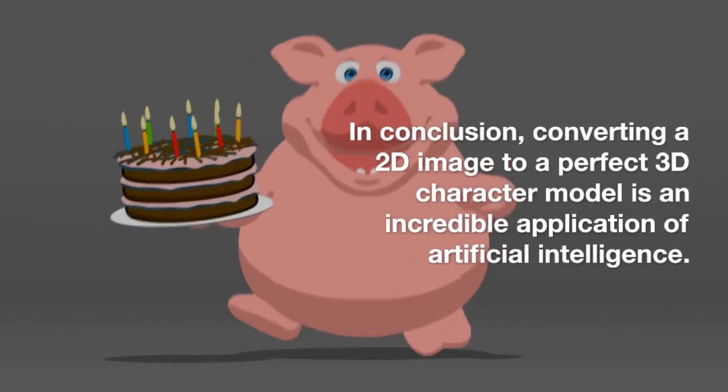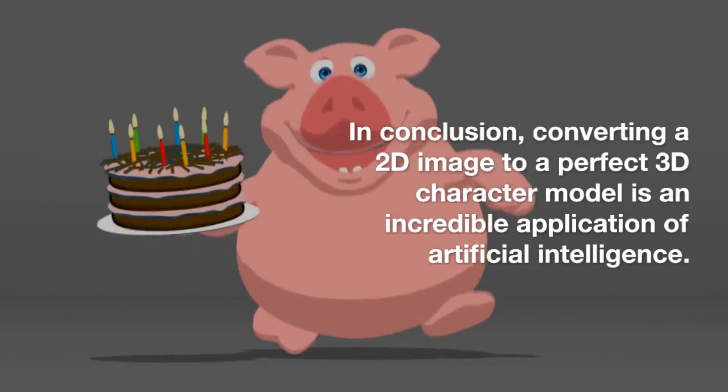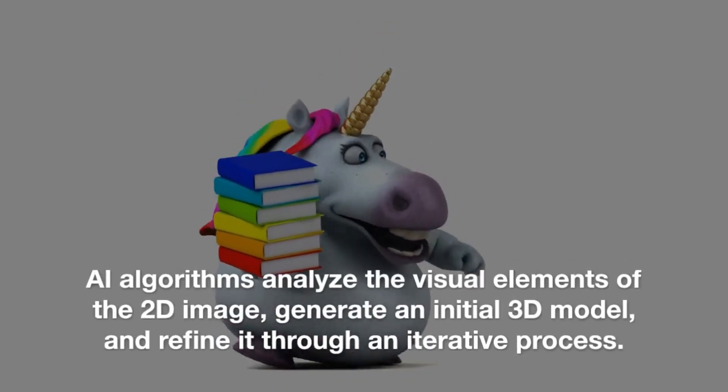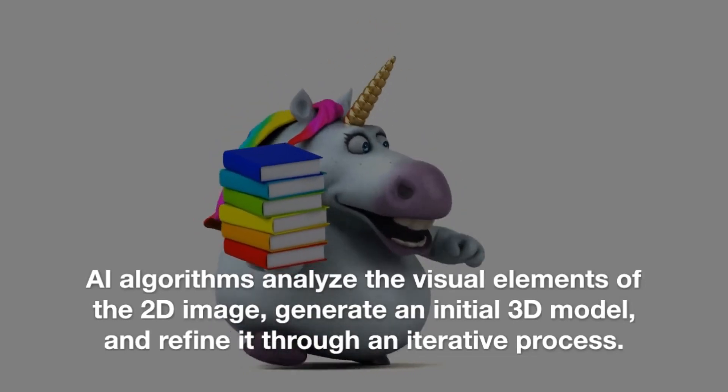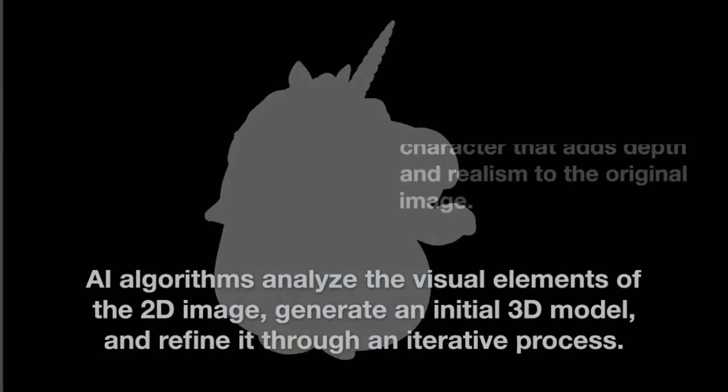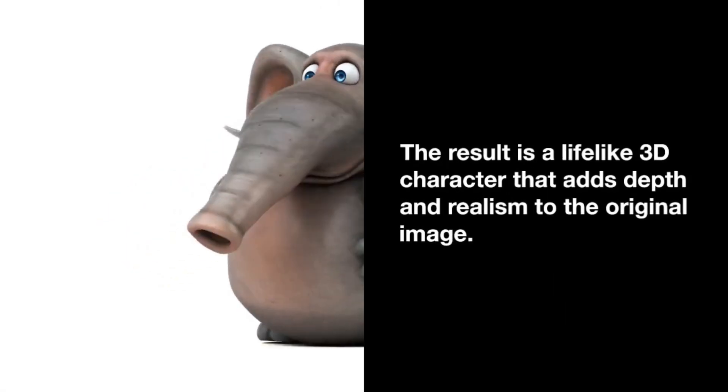In conclusion, converting a 2D image to a perfect 3D character model is an incredible application of artificial intelligence. AI algorithms analyze the visual elements of the 2D image, generate an initial 3D model, and refine it through an iterative process. The result is a lifelike 3D character that adds depth and realism to the original image.